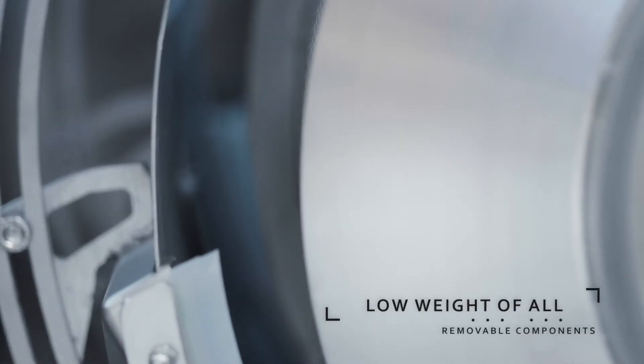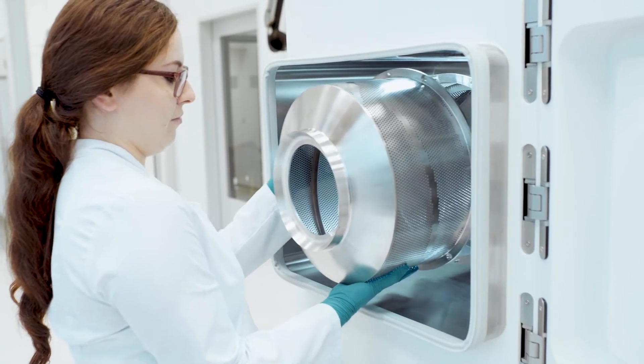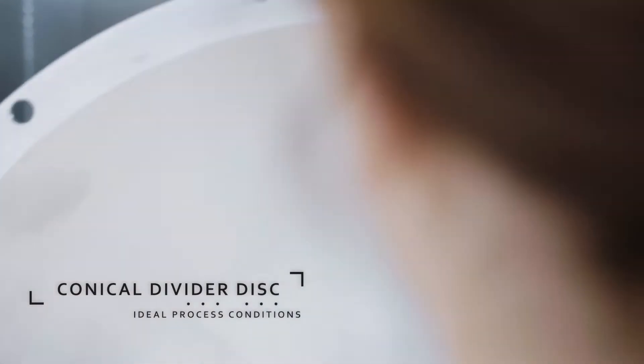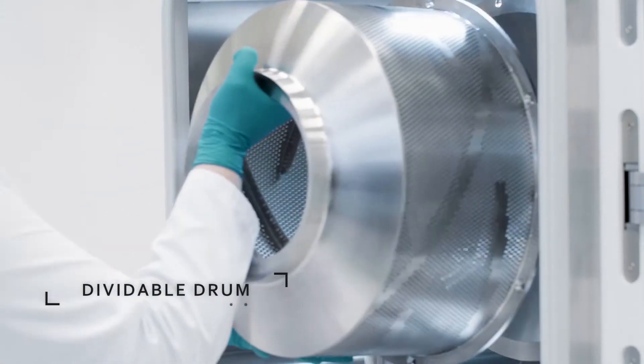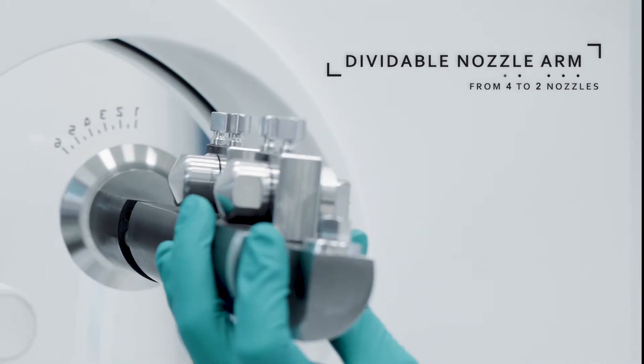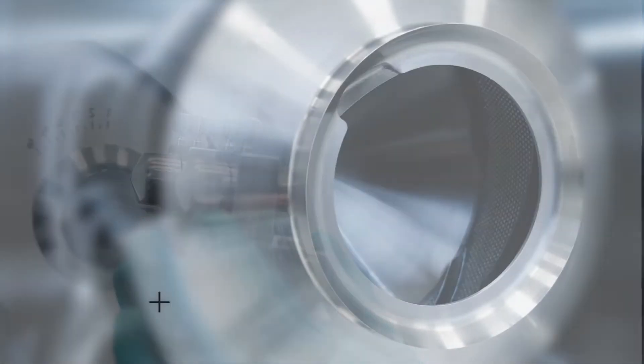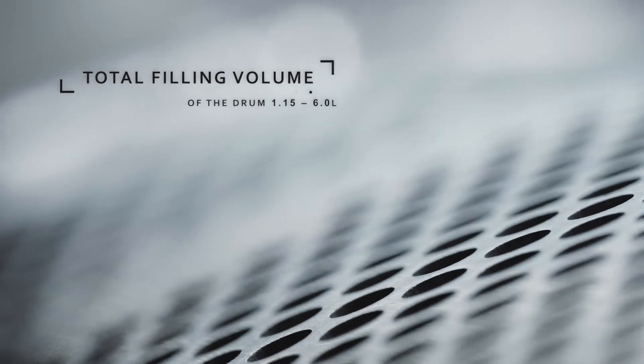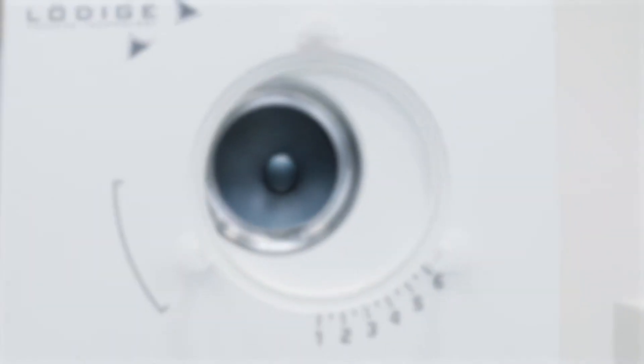All removable parts are characterized by a very low weight. The sophistication of the LC Lab design is reflected by the dividable drum. Together with the nozzle arm, it can be divided in two, making it possible to film coat volumes starting from 0.6 liters. This advantage pays off in the long run, particularly for expensive materials.